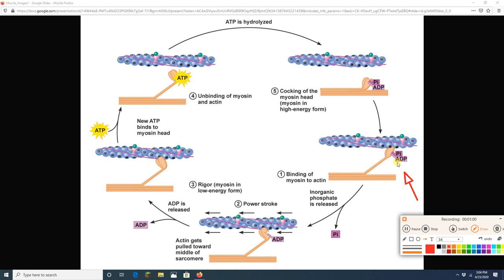So once the myosin grabs on, it is then going to release the phosphate. And when it releases the phosphate, it starts to move, it starts to pull on that actin. And remember, the actins get pulled inward toward the H-zone, so that sarcomeres get shorter. And the myosin then releases the ADP, and it's done with this movement, this pulling, which is known as the power stroke.